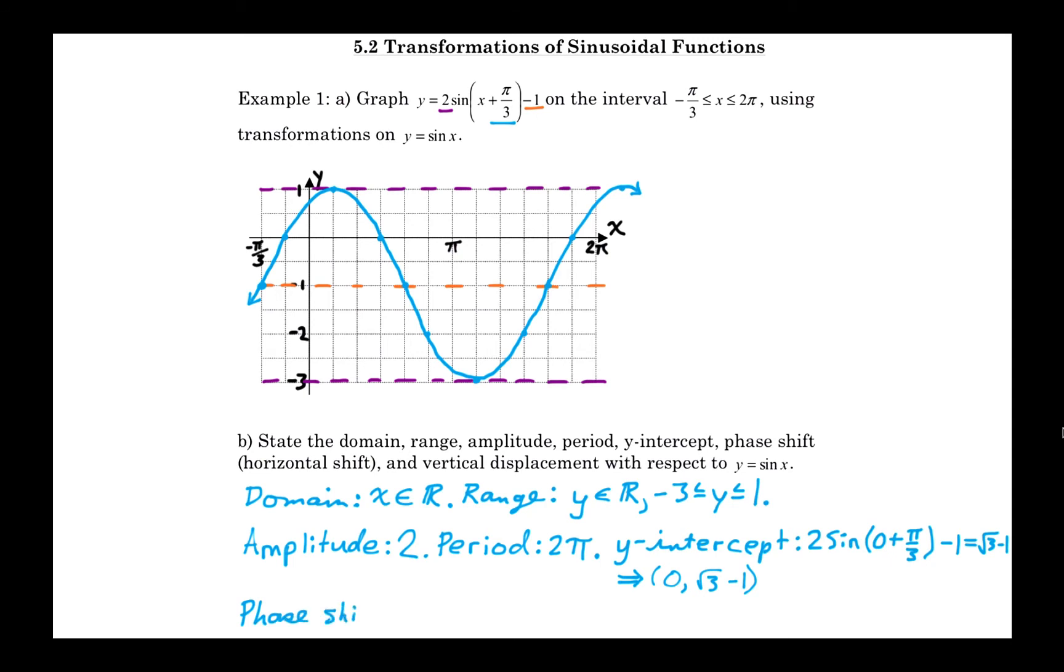And finally, the phase shift, so this is the horizontal shift, so it's pi over 3 to the left, so we say it's negative pi over 3. And finally, the vertical displacement, so this is down 1 unit, so it's negative 1. And that completes the first example.